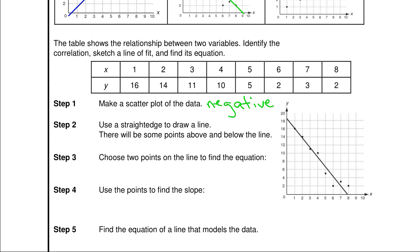We want to choose two points on the line. So we can choose (1, 16) and (2, 14), and we can use that to find the slope.